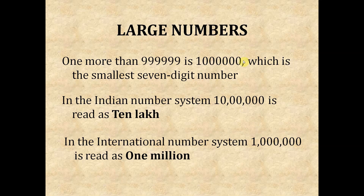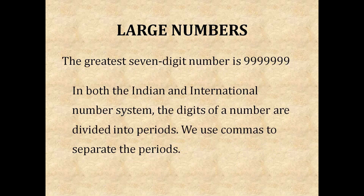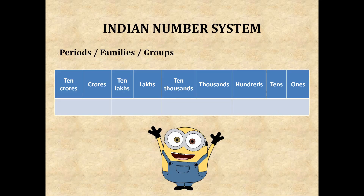See the commas — the difference between the Indian system and international system. In the Indian system, commas separate the first 3 digits and then 2 digits, 2 digits. But in the international system, every 3 digits together a comma is placed. The greatest 7-digit number is 99,99,999. In both the Indian and international number systems, the digits of a number are divided into periods. We use commas to separate the periods, called periods or families or groups.